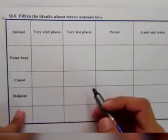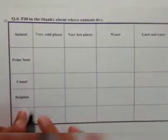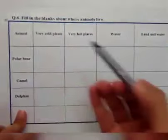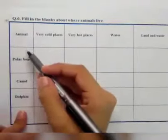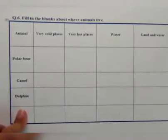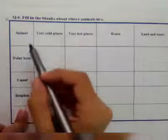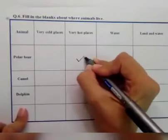Now move toward question number 6: fill in the blanks about where animals live. Here are five columns. In the first column the names of animals are written, and in the next four columns the names of places are given. So first of all we can read the names of animals, then we tell in which place these animals live. First animal is polar bear. Polar bear live in very hot places.